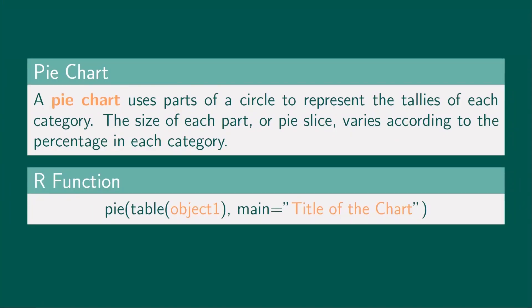Next, let's try to create a pie chart. A pie chart uses parts of a circle to represent the tallies of each category. The size of each part, or pie slice, varies according to the percentage in each category. The code below allows us to generate a pie chart in RStudio. Object1 represents the column that contains the data of your variable, and you can set the title of the graph by replacing 'title of the chart'.